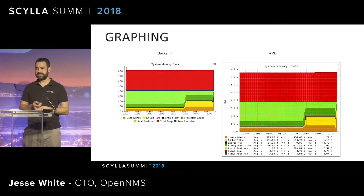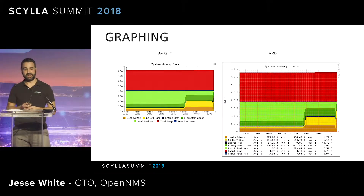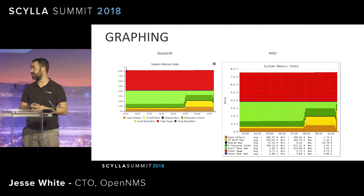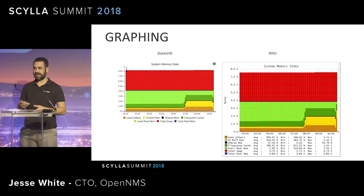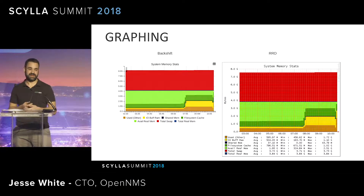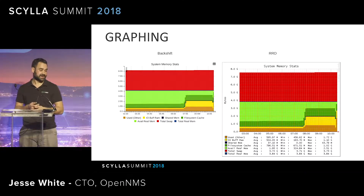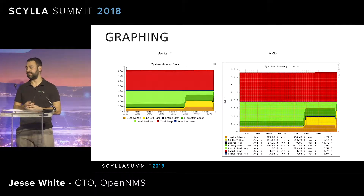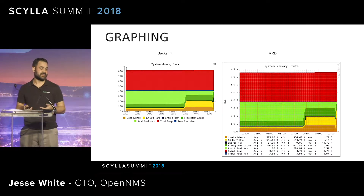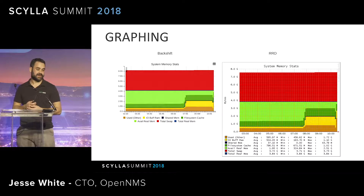RRDTool actually comes with a graphing library and language built in. Looking at the graph on the right, that's what could be generated natively using RRDTool. In OpenNMS, hundreds or thousands of our graphs were already written in that graph definition language. So we developed a solution called Backshift that's able to take those same RRD graph definitions and generate similar graphs that are more interactive than the flat PNGs that RRDTool would generate, and as you can see the graphs look pretty similar.